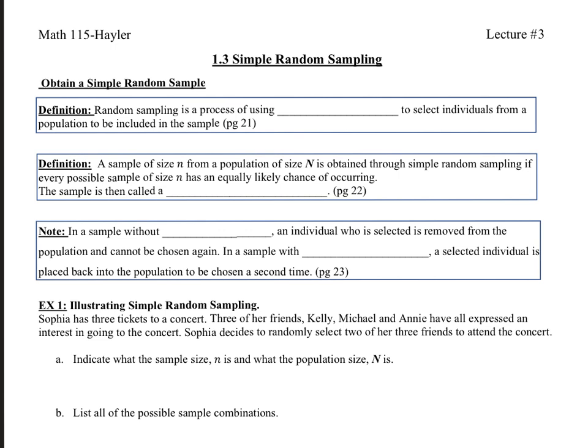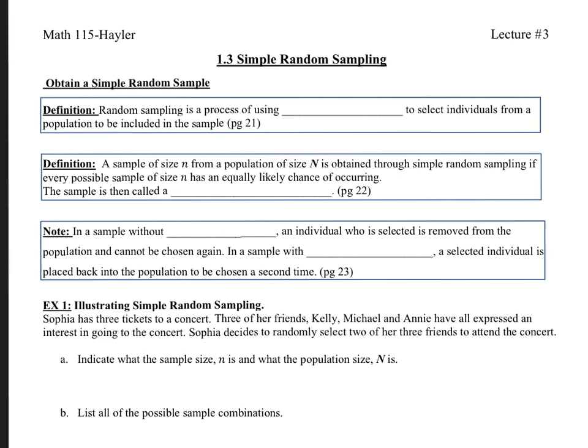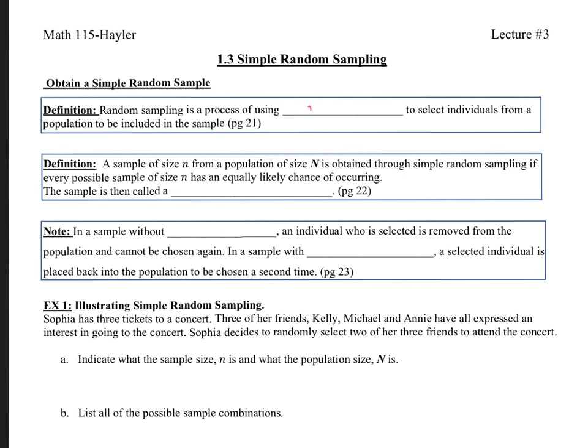So obtaining a simple random sample. For the definition, random sampling is a process of using chance to select individuals from a population to be included in the sample. And as usual, I include the page number where to find this piece of information.